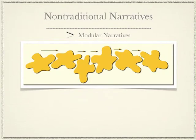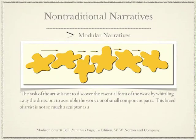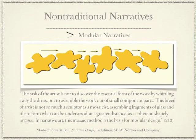In a real sense, the writers of such non-traditional narratives want the readers to become co-creators of the narratives themselves, taking apart stories as if they were dissembling Swiss watches, just to see how they work — deconstructing stories, to use the term popular with such postmodern theorists as Derrida and Foucault, to see how they tick. Bell writes: the task of the artist is not to discover the essential form of the work by whittling away the dross, but to assemble the work out of small component parts. This breed of artist is not so much a sculptor as a mosaicist, assembling fragments of glass and tile to form what can be understood at a greater distance as coherent, shapely images. In narrative art, this mosaic method is the basis for modular design.